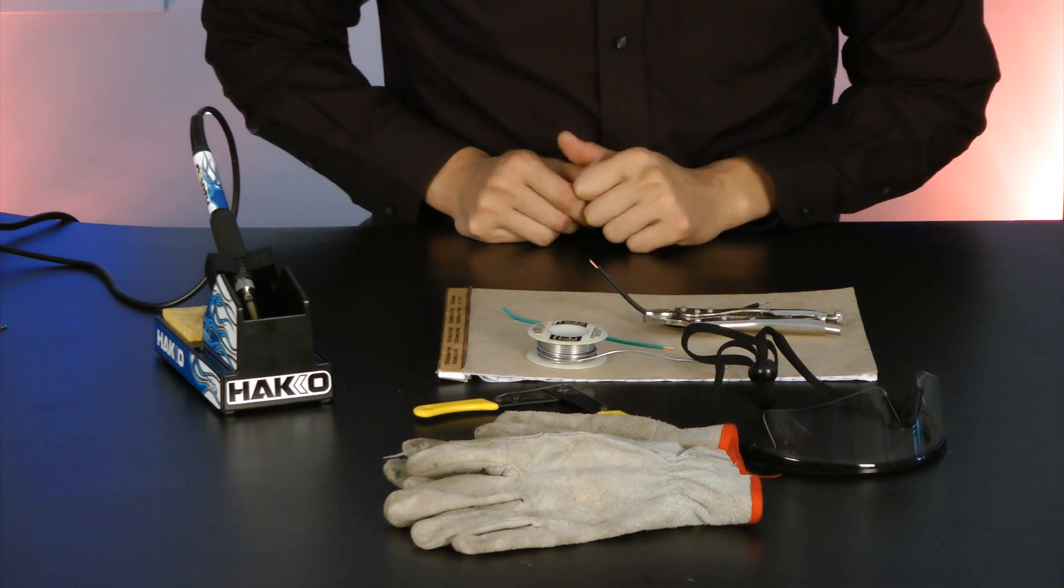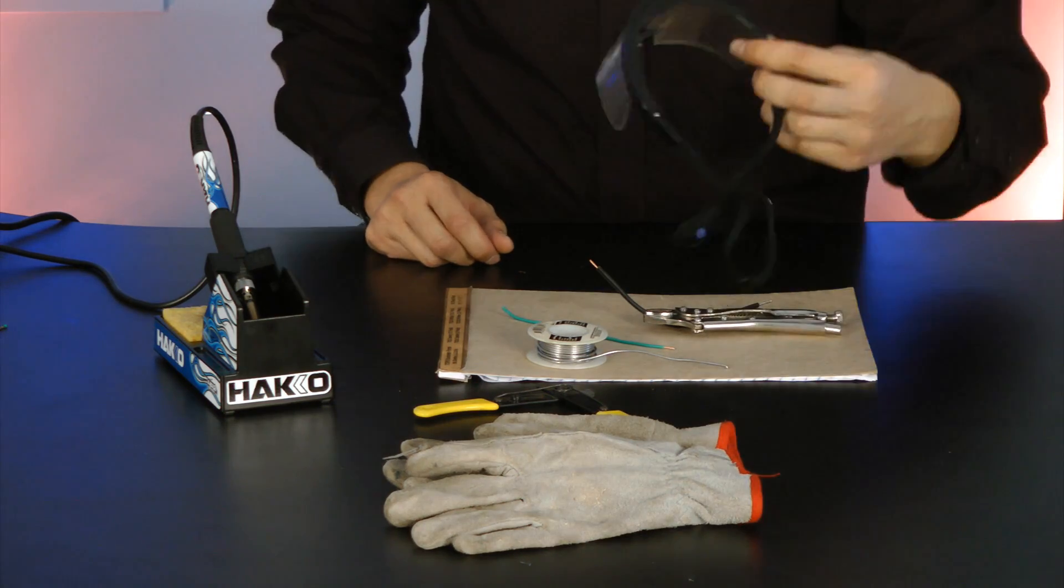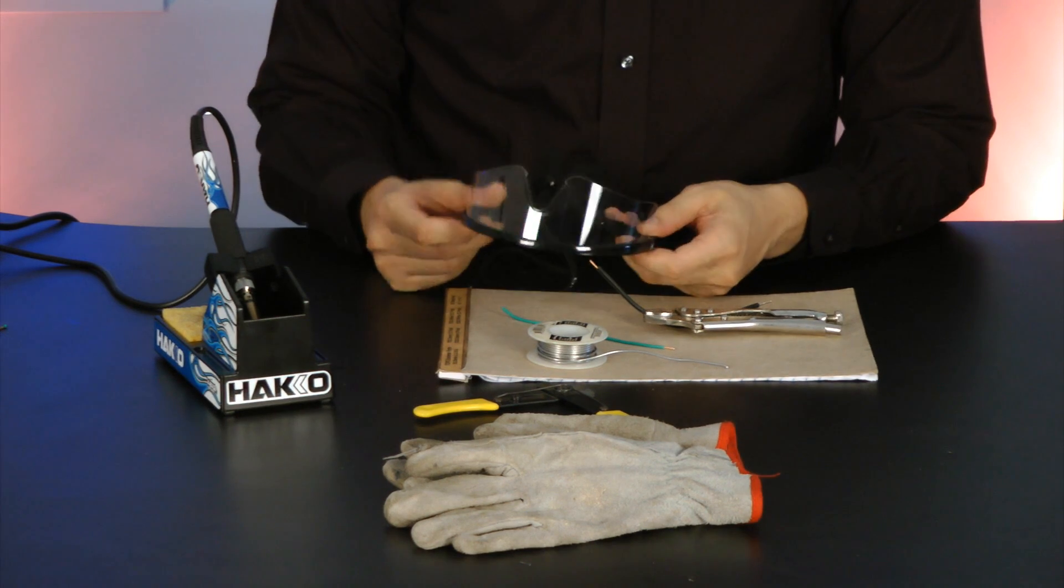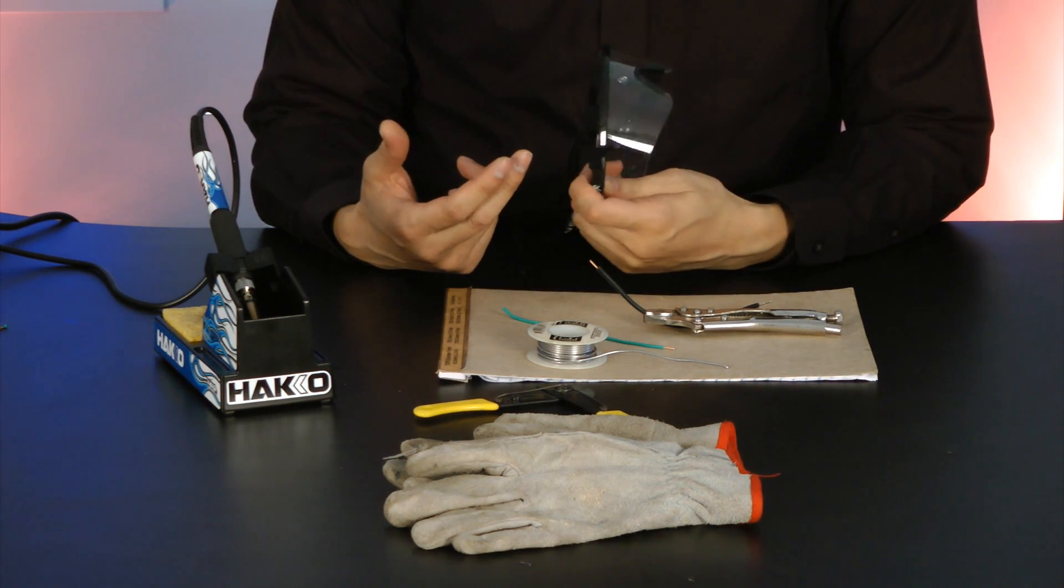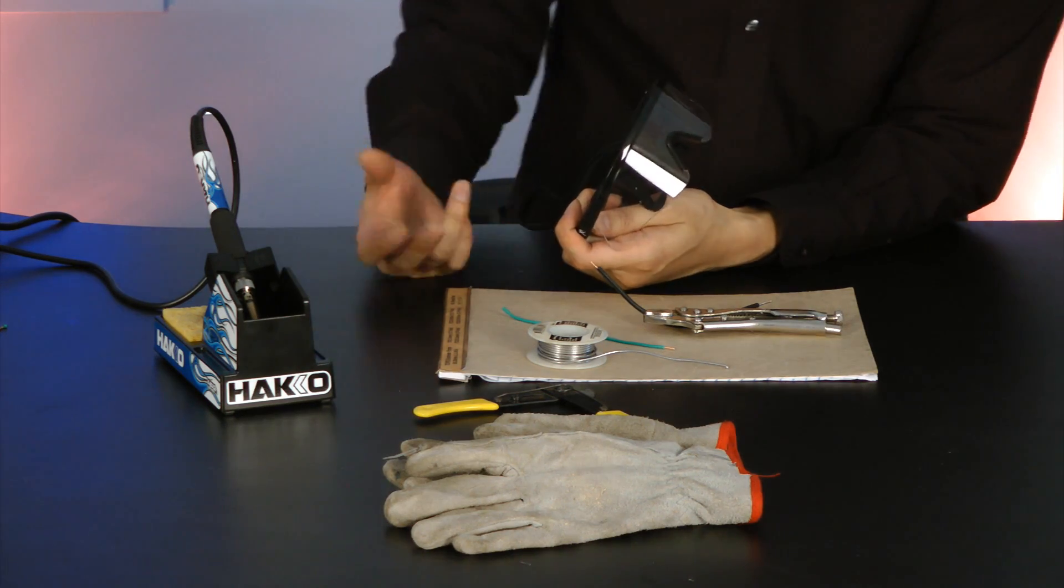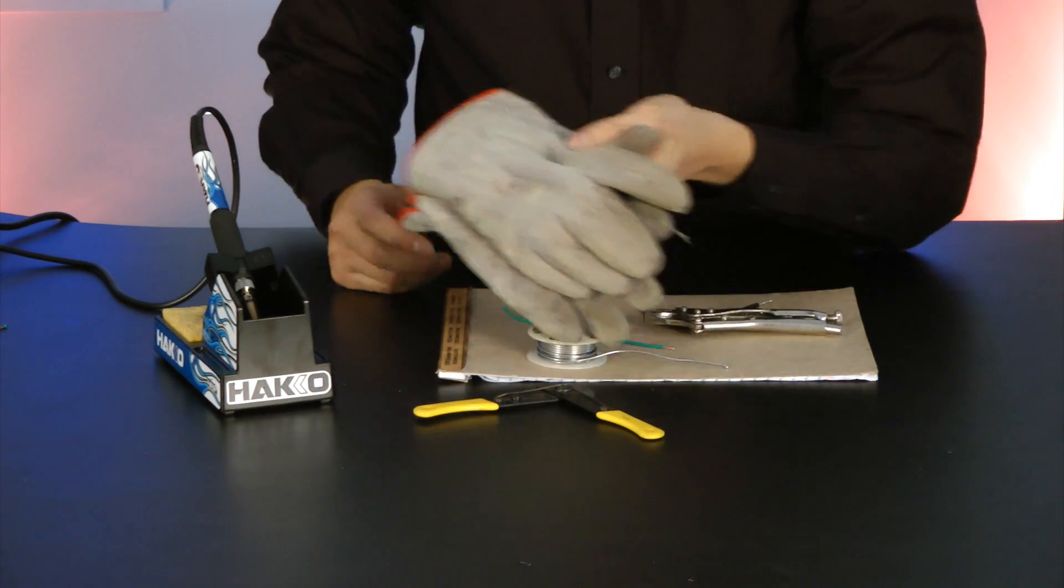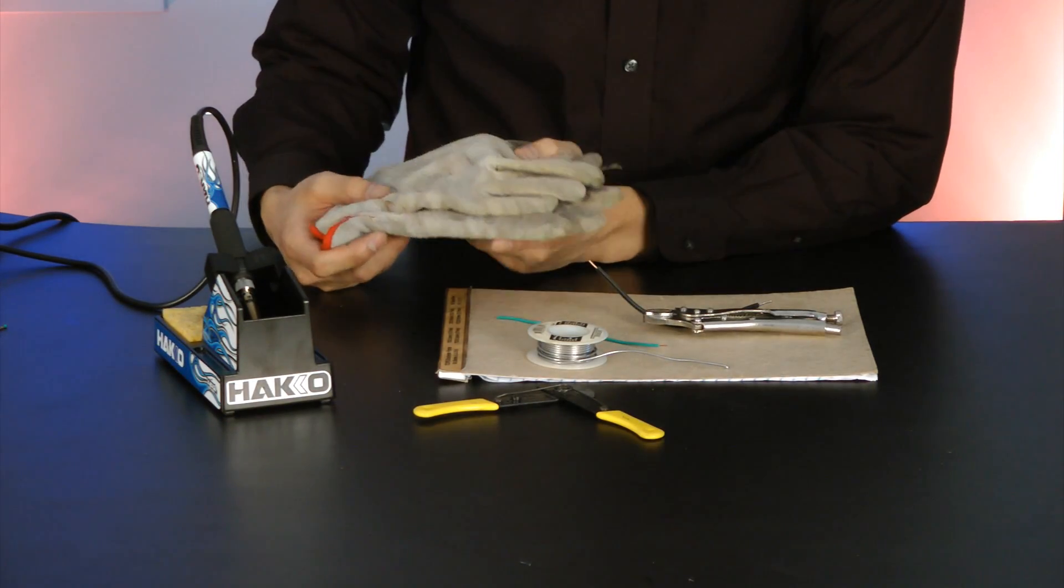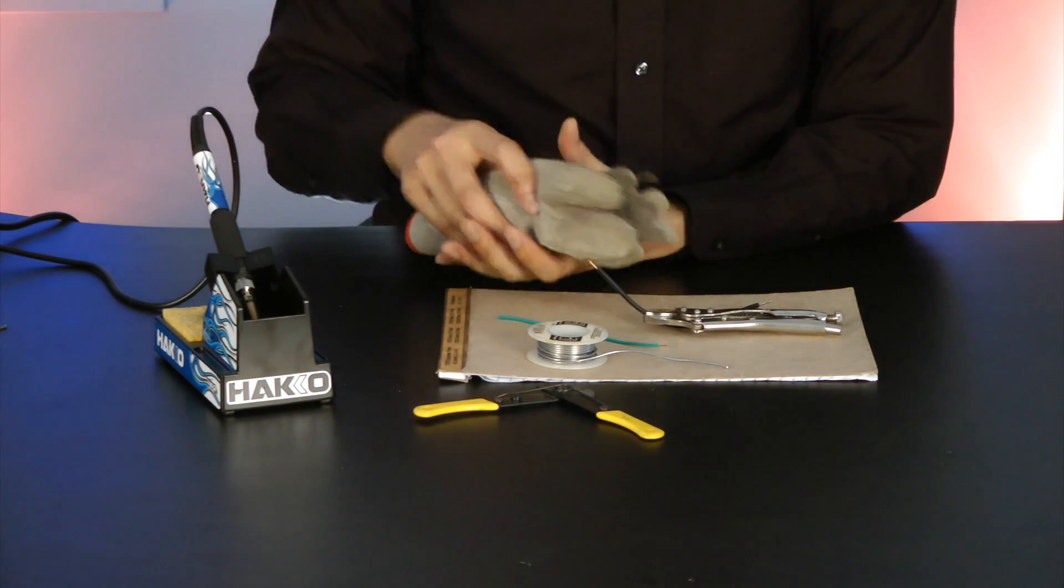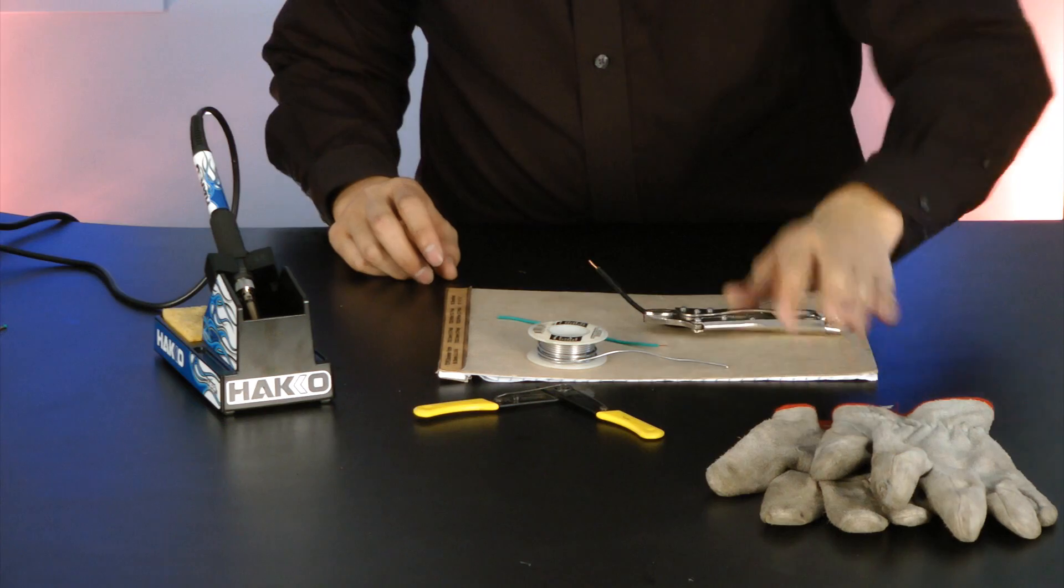Before we get started though, let's cover some safety material. Always wear goggles for some eye protection. This will protect your eyes from any solder that may splash or any flux that will splash. Gloves will protect your hand from getting burnt.